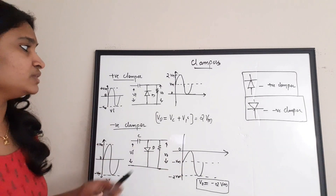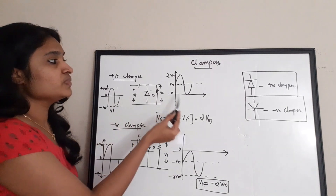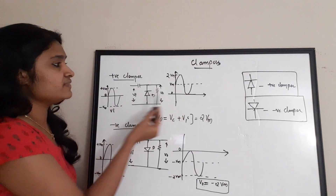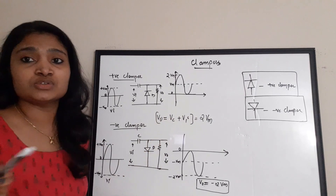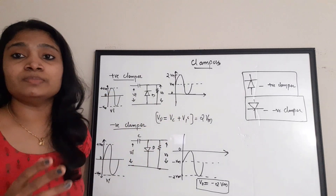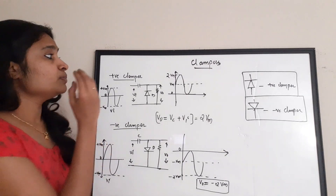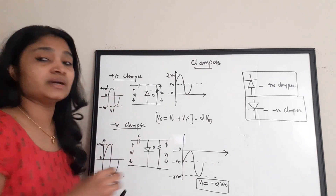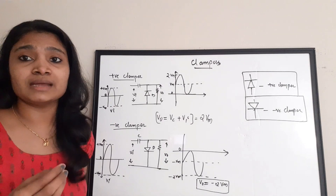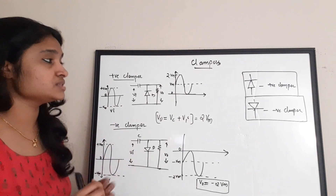For example, if you look at this waveform — this is the input waveform and this is the output waveform — only the DC level is shifted; there is no change in the shape of the waveform. The basic classification of clampers is: positive clamper, negative clamper, and clampers with bias — which can be either positive bias or negative bias. We will discuss all of those.